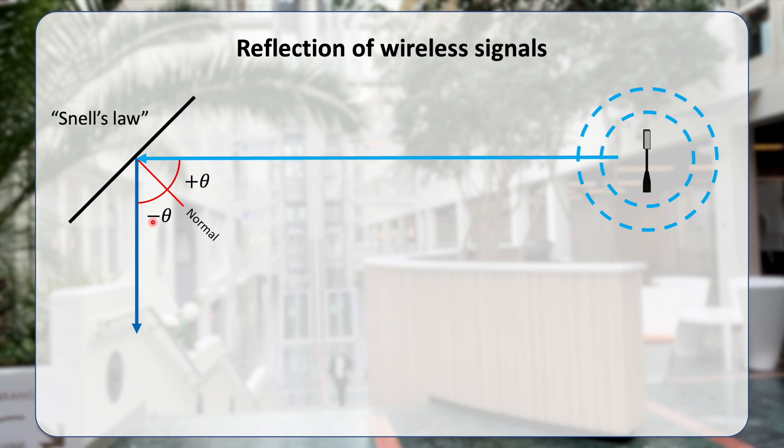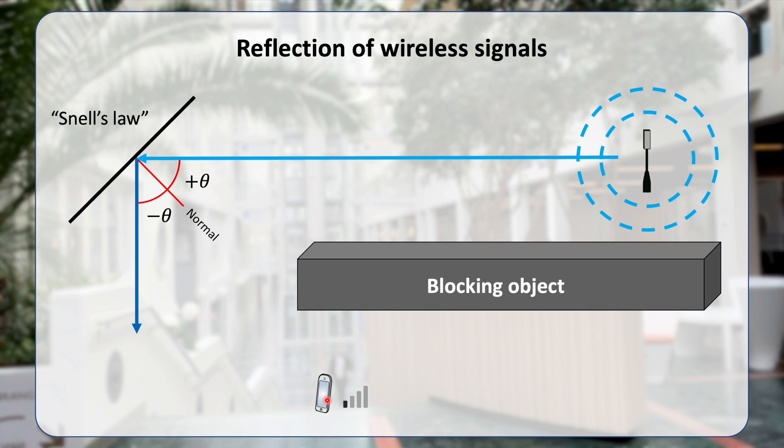Suppose now that there is a user device that would like to receive the signal, but there is a blocking object that makes it impossible for the signal to go directly from the transmitter to the receiver. Therefore, it is having bad coverage. We can also see that the reflected signal is going straight down, so it is not reaching the device either. And this is all determined by how the reflected surface looks like.